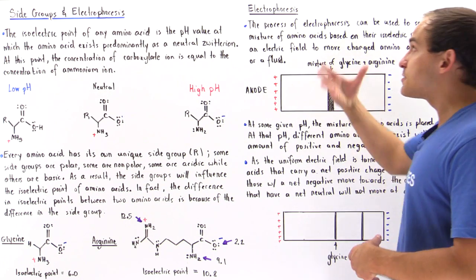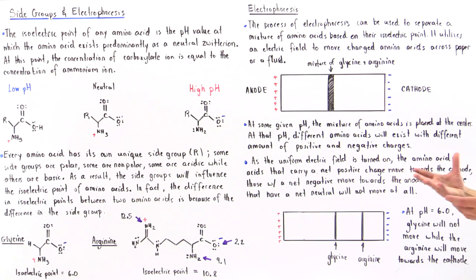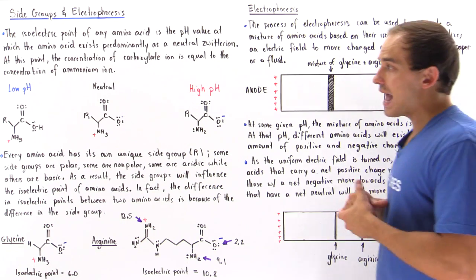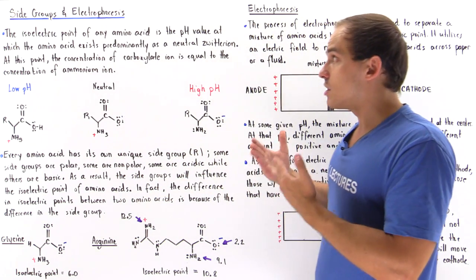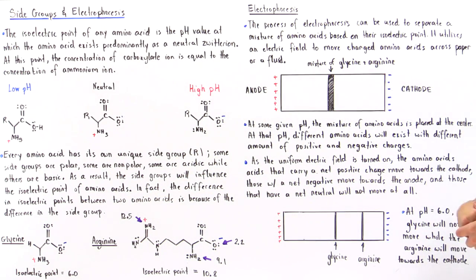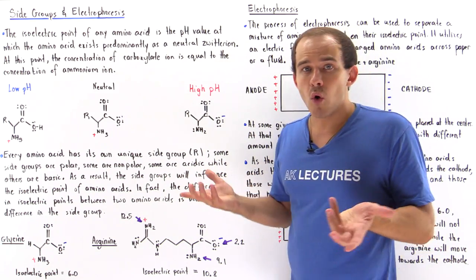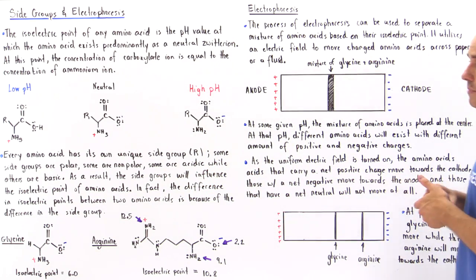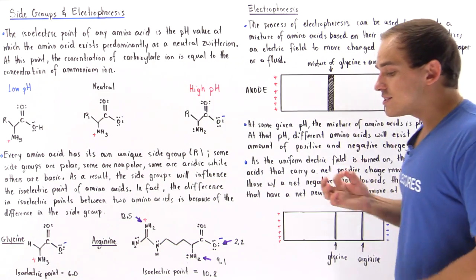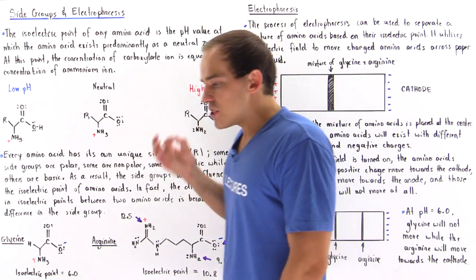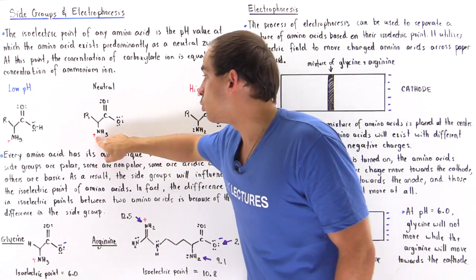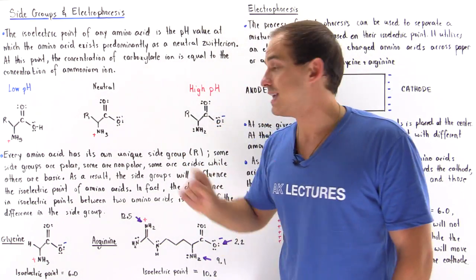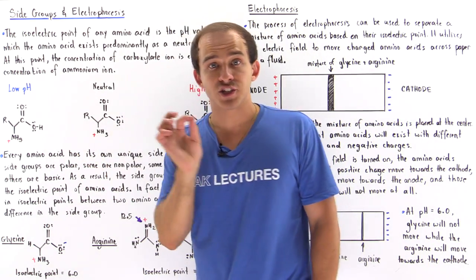This process of electrophoresis separates amino acids on the basis of their charge and their isoelectric point, and can be very useful when we want to separate a mixture of three or more amino acids. What determines the isoelectric point of an amino acid is not the carboxylic acid group or the ammonium group, but ultimately it's the R group that differentiates the isoelectric point of one amino acid from another.